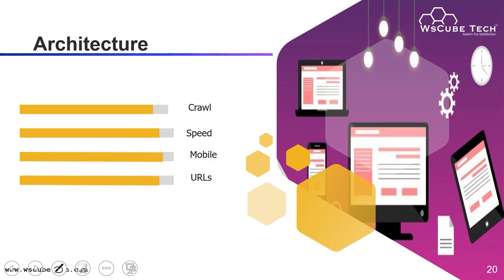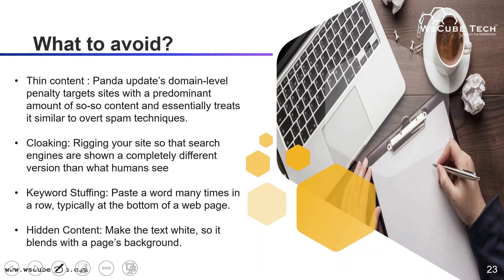Now, these are the things to avoid when doing On-Page SEO. First, thin content — the Panda update applies domain-level penalties against sites with a predominant amount of low-quality content, treating it similar to spam. The amount of content on your website must not be thin; use a proper amount. Next, cloaking — a bad activity where you rig your site so that search engines are shown a completely different version from what humans see. For example, a YouTube video title that has nothing to do with the actual video content is a form of cloaking.